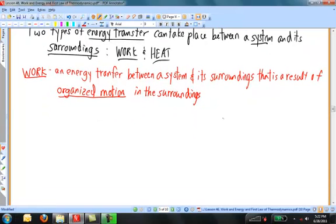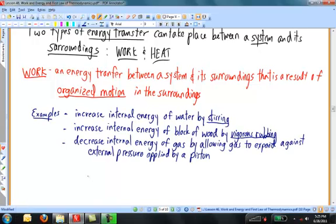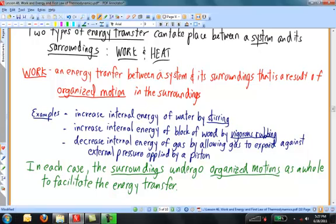The first kind of energy transfer is work. Work is an energy transfer between a system and its surroundings that results in organized motion in the surroundings. So, for example, I could increase the internal energy of water by stirring it. I could increase the internal energy of a block of wood by rubbing it vigorously, say with my hands. I could make the internal energy of a gas decrease by letting it push a piston outward in a cylinder. In each case, I'm causing an energy transfer between a gas and its surroundings that results from organized motions in the surroundings. Something is doing work on the surroundings, and the surroundings are pushed in a certain direction.